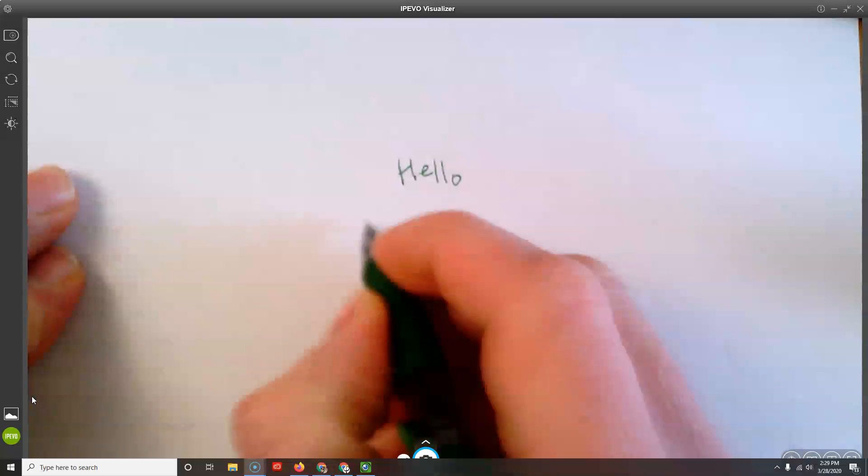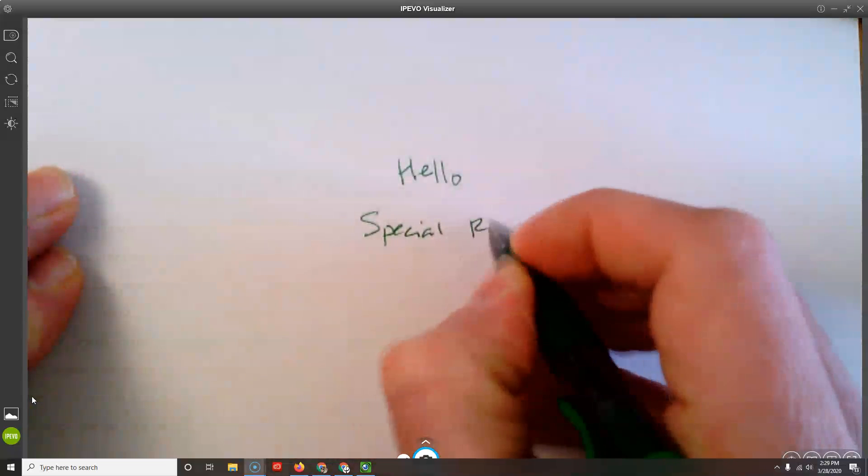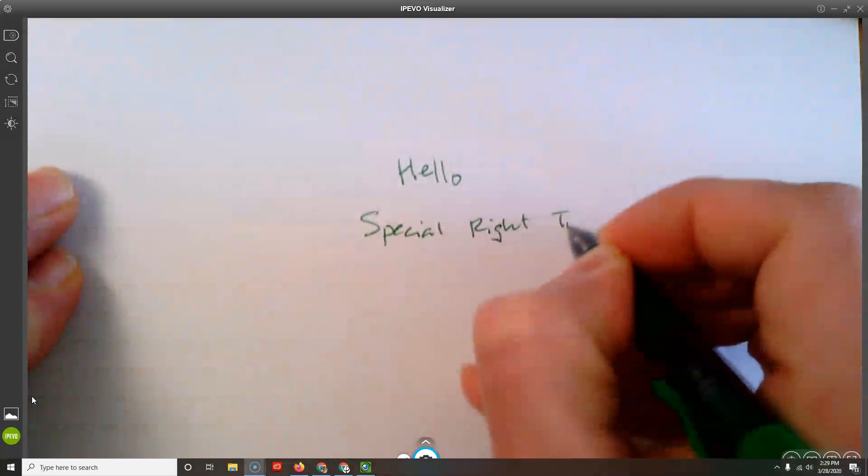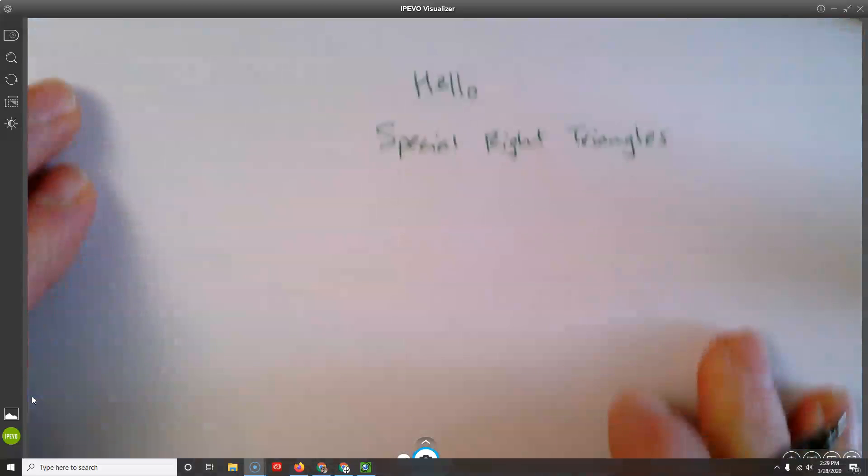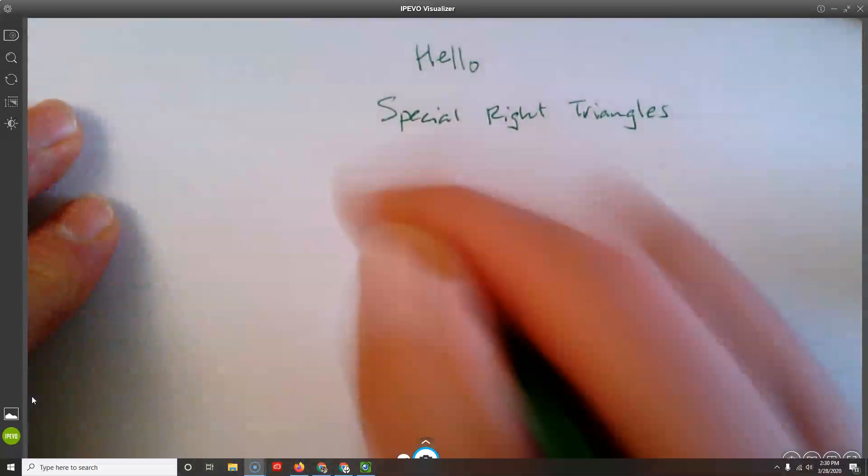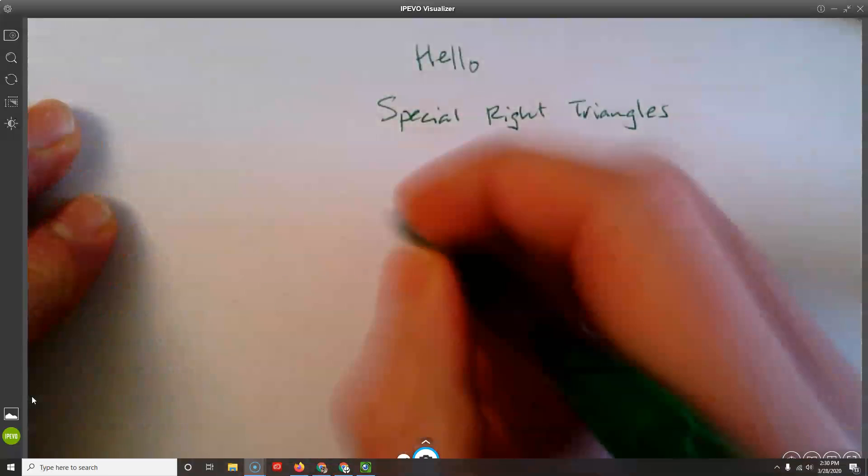Alrighty, let's take a look at special right triangles. So there's lots of right triangles but there are two of them that are called special and you get each of these by taking something else and cutting it in half.